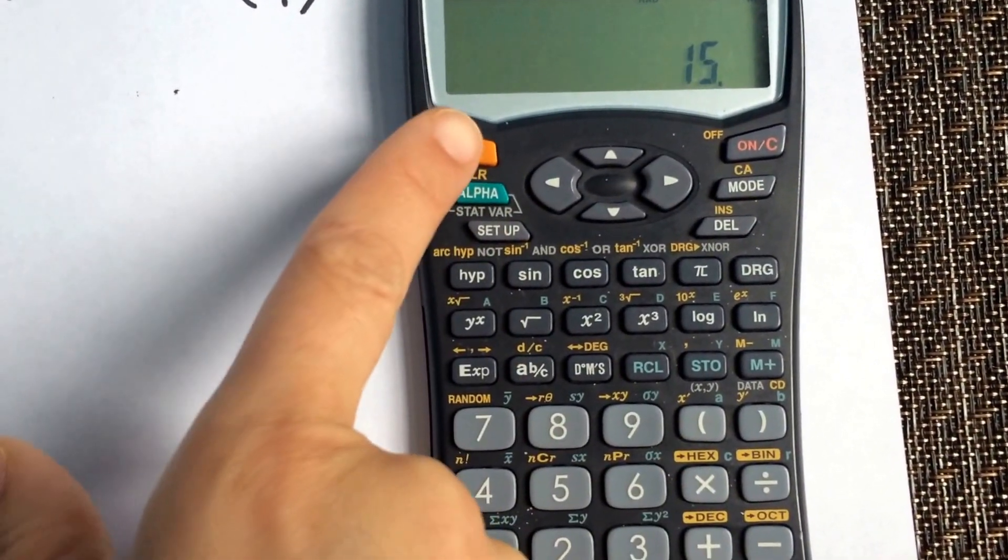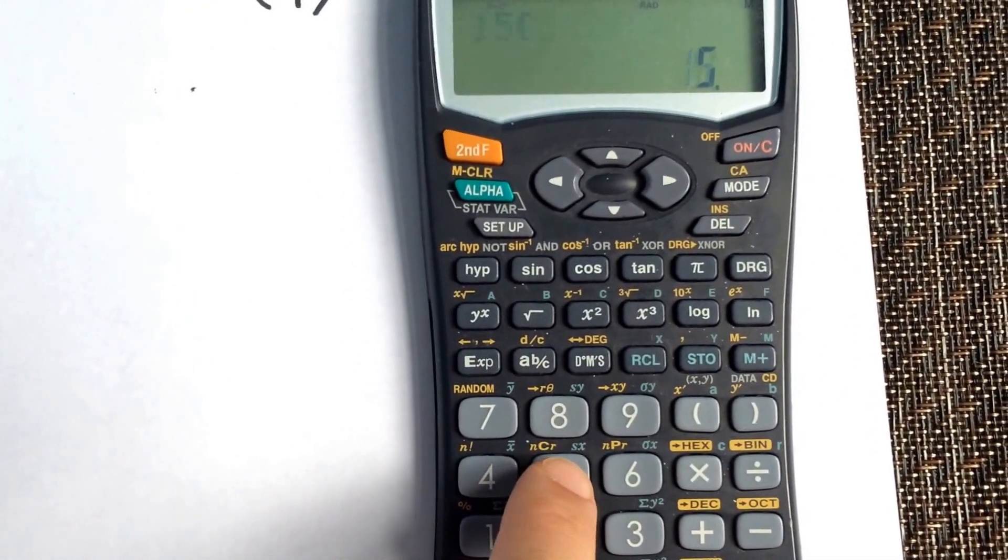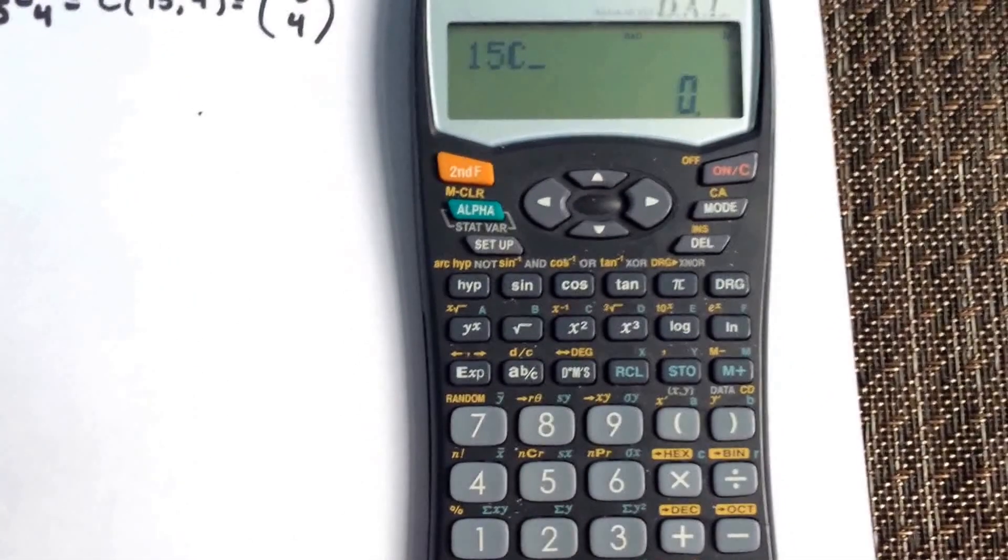So you're going to have to select second function, the orange key, that 5. You'll see that the C will show up.